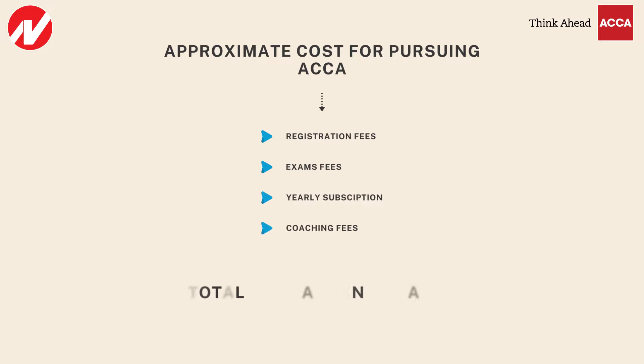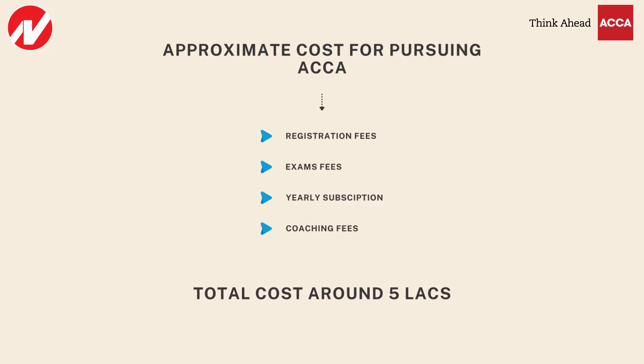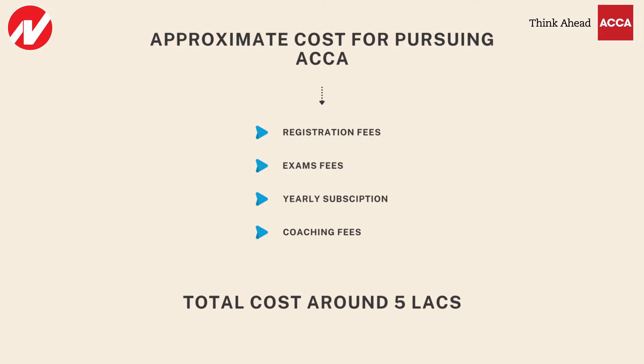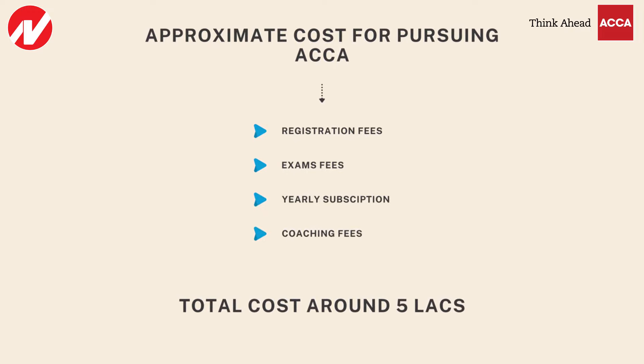What is the cost of pursuing UKACCA? Commerce is generally cheaper than science. The average cost for any accountancy profession, whether Indian or global, is around 4.5 to 5 lakh rupees covering everything. The fees are paid in British Pounds. The different components are: registration fee, exam fees as and when you appear, yearly subscription as you progress each year, and coaching fees for learning the subjects. Overall, a student should budget around 5 to 5.5 lakhs depending on the UK pound exchange rate.